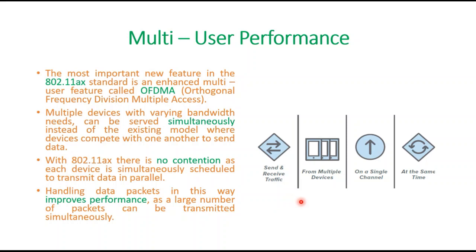Looking at the typical features of Wi-Fi 6 shown pictorially: it can send and receive traffic simultaneously — uplink and downlink both work together. Multiple devices can transmit and receive data at a time on a single channel. These are the main multi-user performance features of Wi-Fi 6.